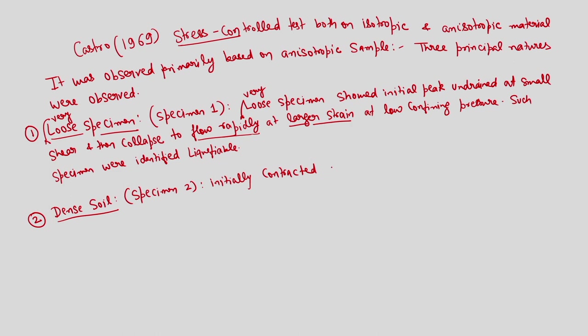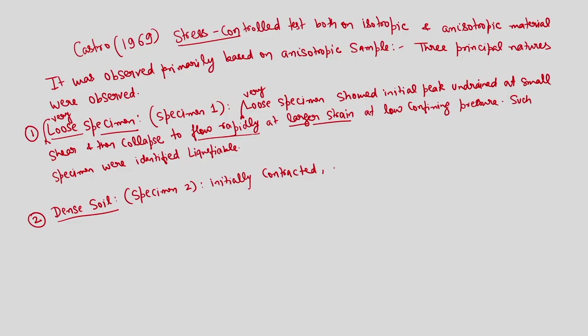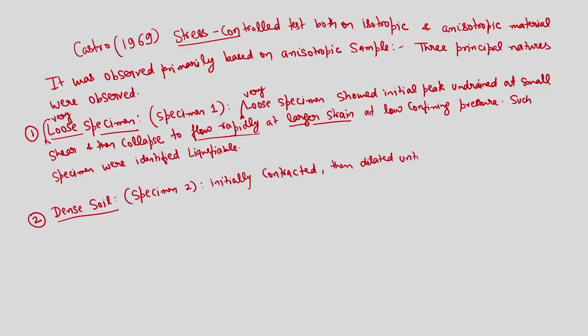In this case, initially the sample contracted, then dilated — strain softening followed by dilation — with orientation of particles along the plane of movement. The same procedure continues until a relatively larger axial strain at relatively high confining pressure. Remember, in the first case with very loose specimens, there was an initial increase in confinement, and once the peak value was reached, there was loss of confinement, with the sample collapsing and very large axial strain following.